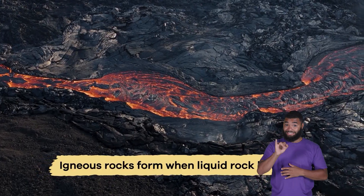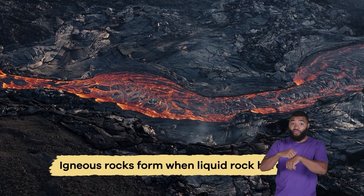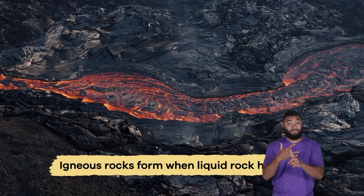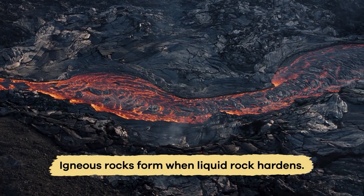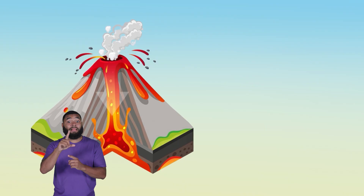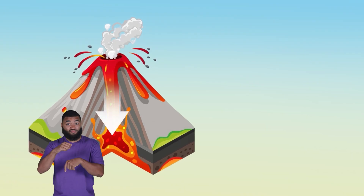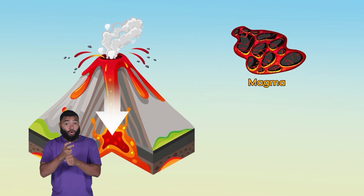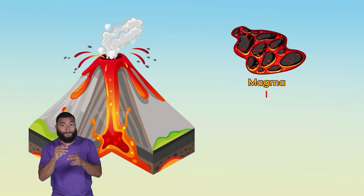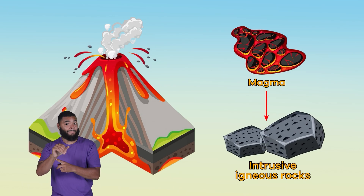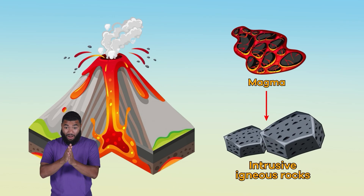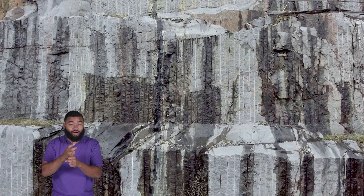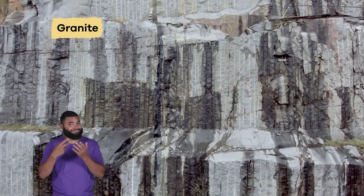Igneous rocks form when liquid rock hardens. When the liquid rock is below ground, it is called magma. When it hardens, it forms intrusive igneous rocks, like granite.